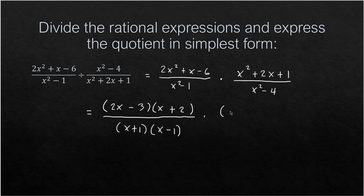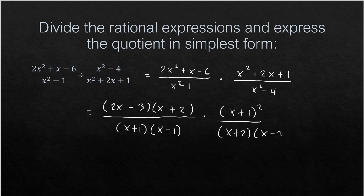X² + 2X + 1 is a perfect square trinomial, so it factors as (X + 1)². And X² − 4 is another difference of two squares: (X + 2)(X − 2). Now we cancel common factors. X + 1 appears twice so it cancels to 1, and X + 2 appears in both numerator and denominator and cancels.